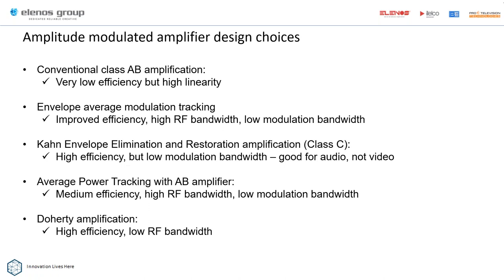These are the amplitude modulator design choices we're going to look at today. It breaks down into roughly four categories. We've actually introduced the Kahn envelope elimination system. The first is the conventional class AB, often known as push-pull amplification — very low efficiency but very high linearity — pretty much what every TV transmitter operated with over the last 50 years.